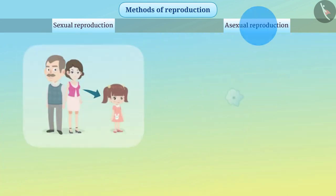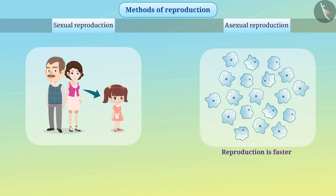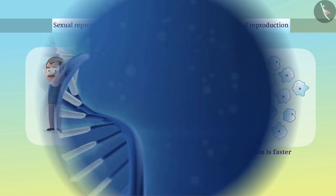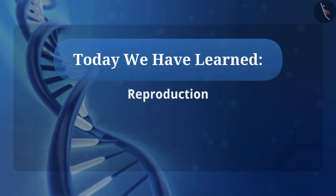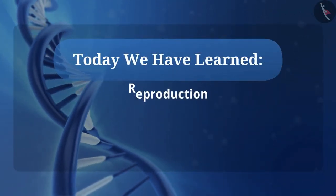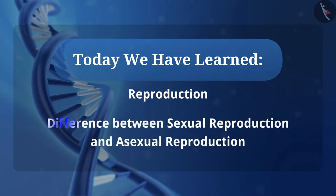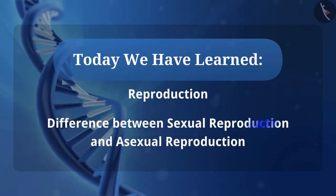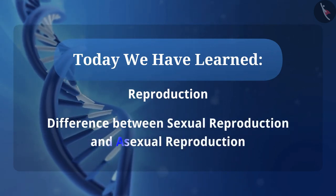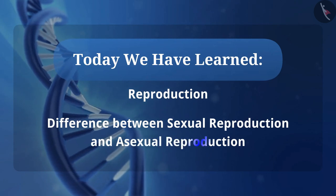Asexual reproduction is faster as compared to sexual reproduction. Today we have learned important things about reproduction and the difference between sexual reproduction and asexual reproduction.